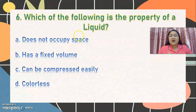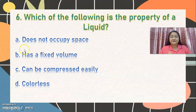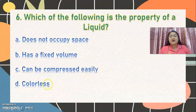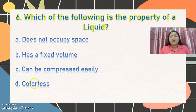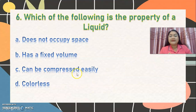Number 6: which of the following is the property of a liquid? Letter A, does not occupy space. Letter B, has a fixed volume. Letter C, can be compressed easily. Or letter D, it is colorless. The correct answer is letter B — liquid has a fixed volume.